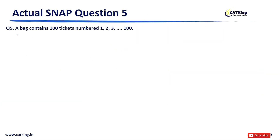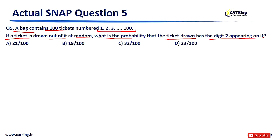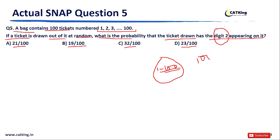Moving on to Question 5: A bag contains 100 tickets numbered 1, 2, 3, 4 and so on up to 100. If a ticket is drawn at random, what is the probability that the ticket drawn has the digit 2 appearing on it? Options: Option A: 21/100, Option B: 19/100, Option C: 32/100, Option D: 23/100. We need to find how many tickets have the digit 2 appearing on them.